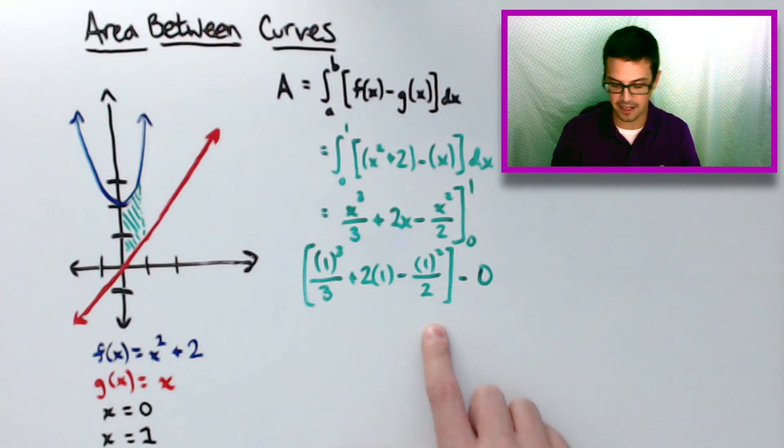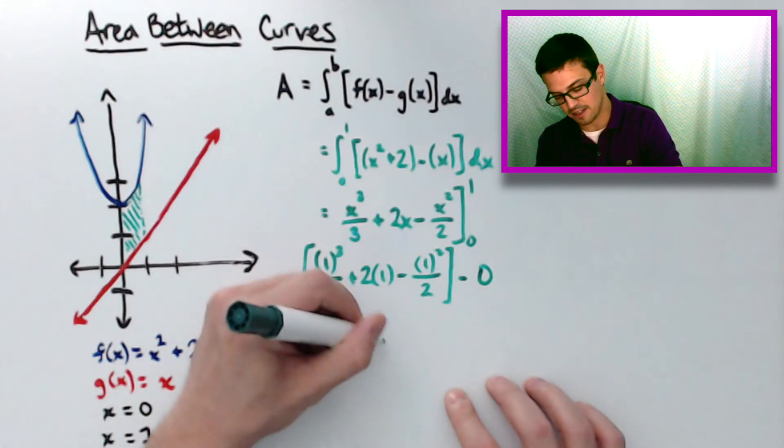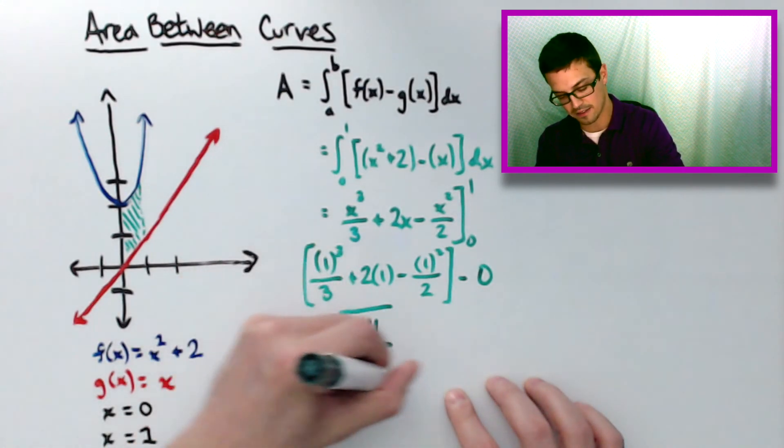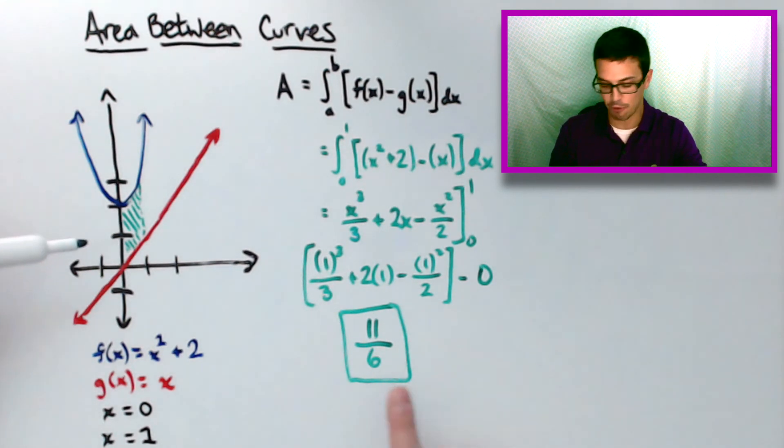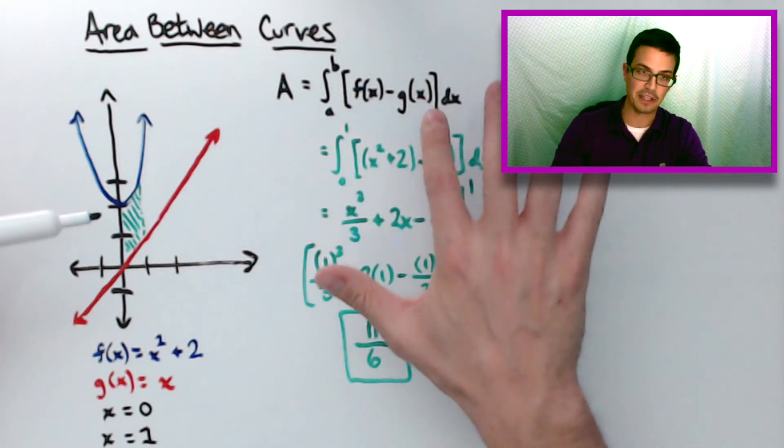And then we're just going to do some math here. This ends up coming out to be 11 sixths. So the area of this green region right here would be 11 sixths, based on using this equation up here.